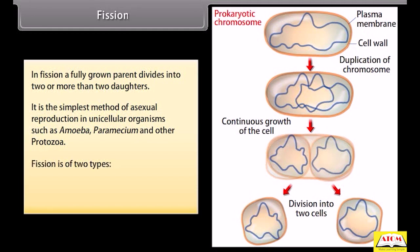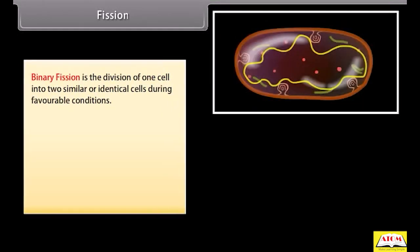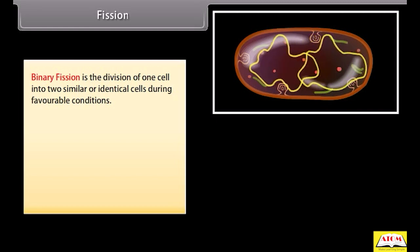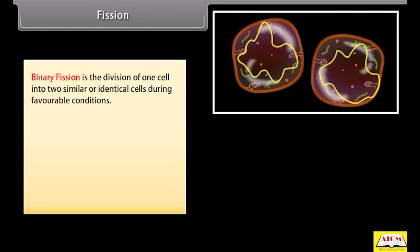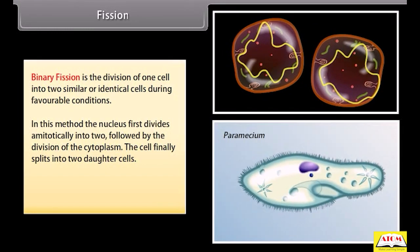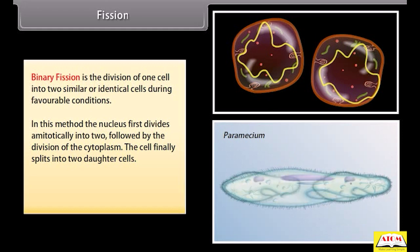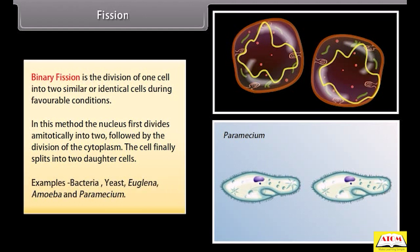Fission is of two types: binary fission and multiple fission. Binary fission is the division of one cell into two similar or identical cells during favorable conditions. In this method, the nucleus first divides amitotically into two, followed by division of the cytoplasm, and the cell finally splits into two daughter cells. Examples include bacteria, yeast, Euglena, amoeba, and paramecium.